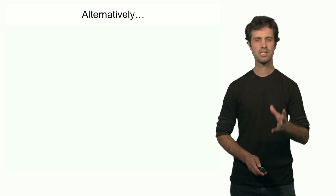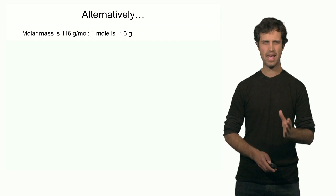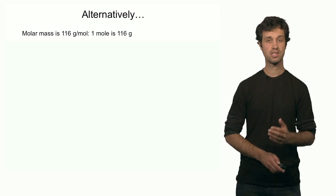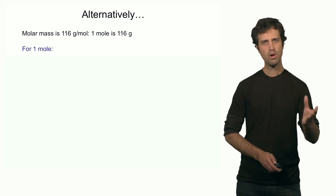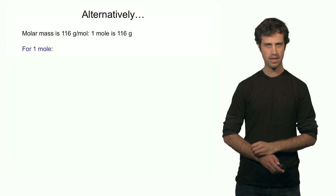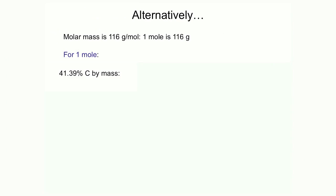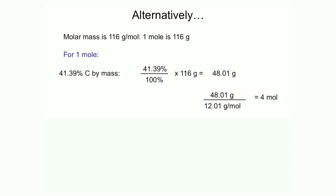There is a quicker way to do this. Instead of assuming 100 grams, I assume I have one mole of the compound. If I have one mole, in this case I have 116 grams, because 116 is the molar mass of the compound. I determine how many moles of carbon are in 116 grams. There is 41% carbon, so 41% of 116 equals 48 grams of carbon in one mole of the compound. Dividing 48 by the molar mass of carbon gives 4 moles of carbon in one mole of the compound.